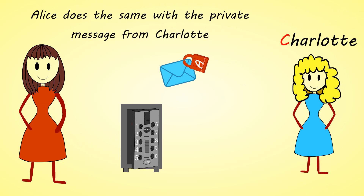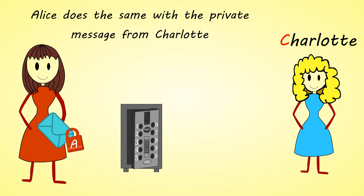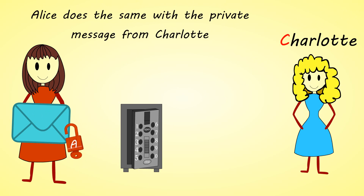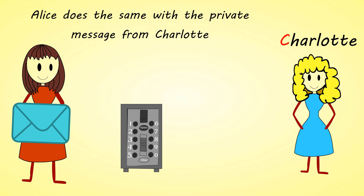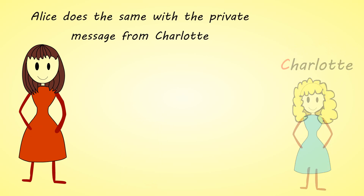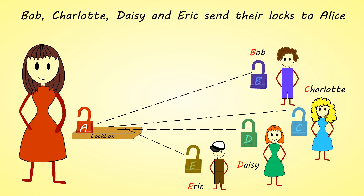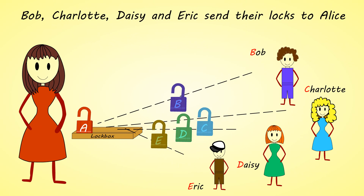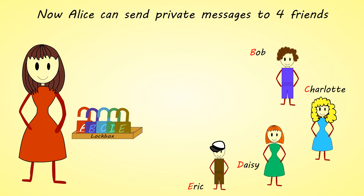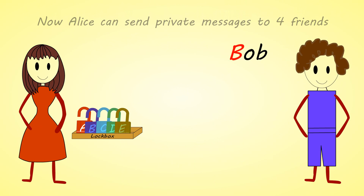Alice does the same with the private message from Charlotte. Bob, Charlotte, Daisy, and Eric send their locks to Alice. Now Alice can send private messages to her four friends.